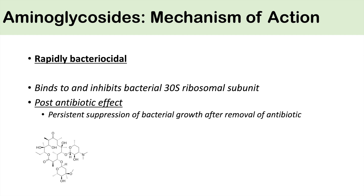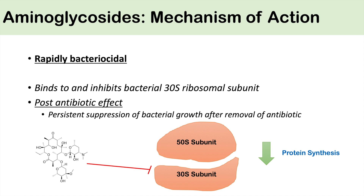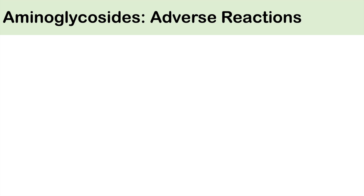So the mechanism of action is: an aminoglycoside binds to the bacterial 30S ribosomal subunit, inhibiting it, leading to decreased protein synthesis, and ultimately a rapid bactericidal effect.